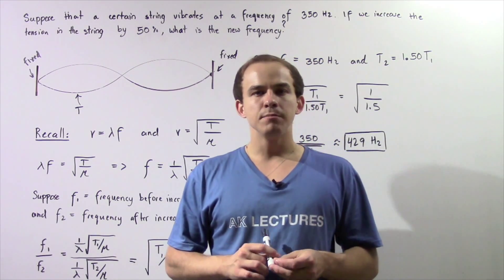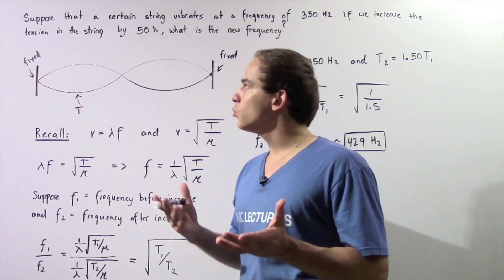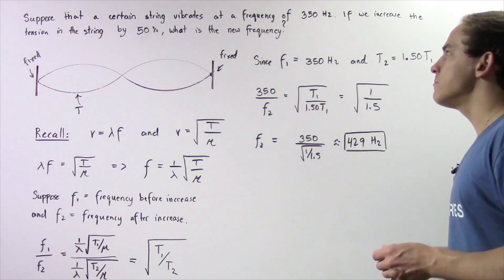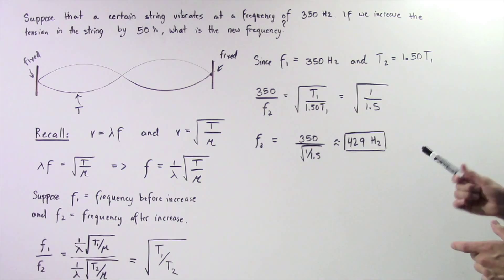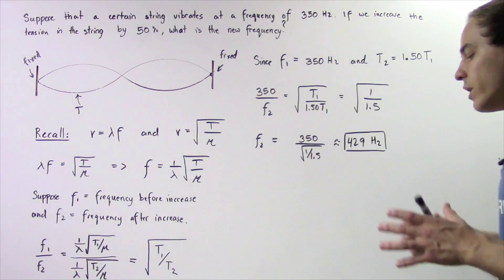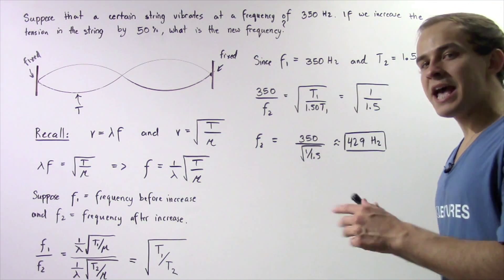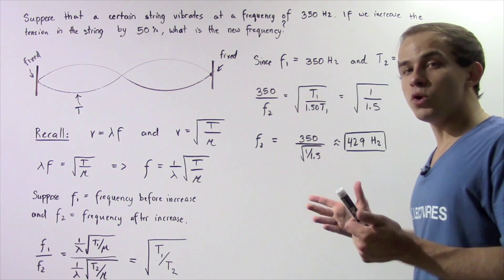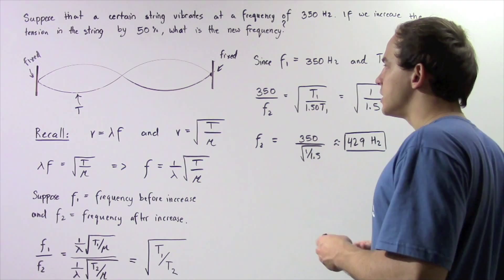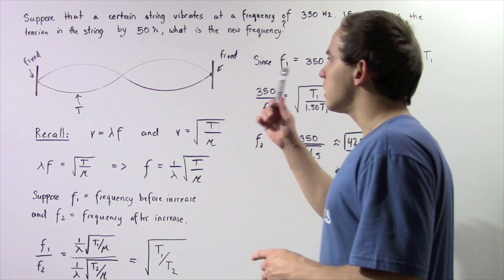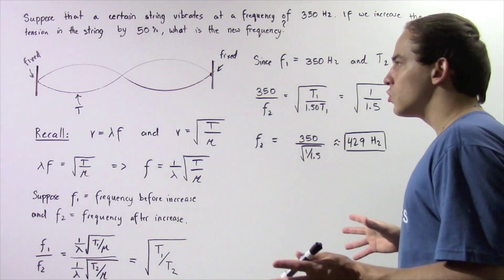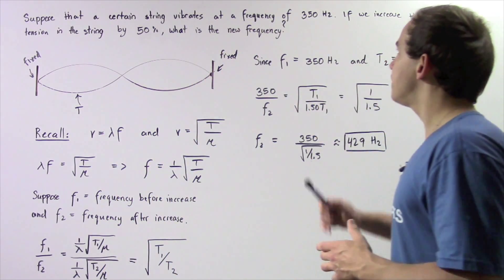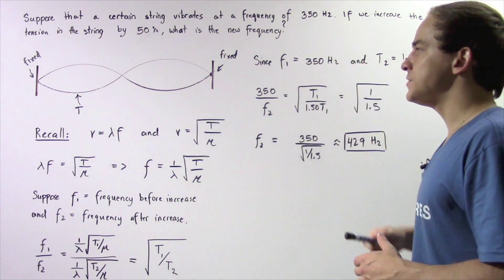Let's look at the following example that deals with standing waves. Let's suppose that a certain string vibrates at a frequency of 350 Hz. Now if we increase the tension in our string by 50%, what will be the new frequency? Before we begin, let's look at our diagram. Let's suppose we have the following standing wave that is created by a frequency of 350 Hz.